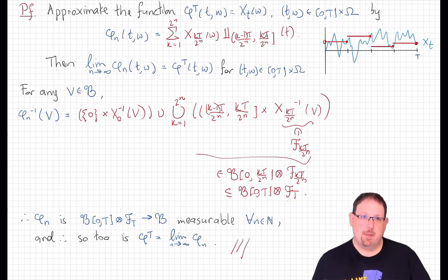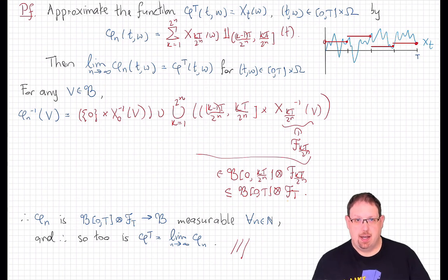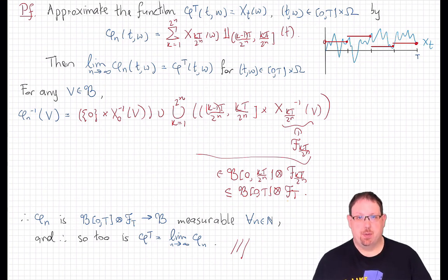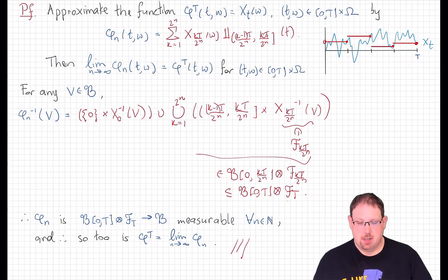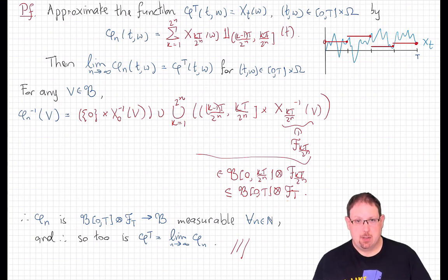That means it's going to make sense to compose X with a random time τ, if that random time is measurable enough. Progressive measurability is designed specifically to fit with stopping times. So our next stop is continuous time stopping times.